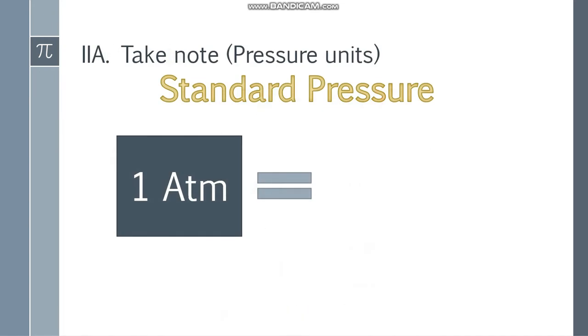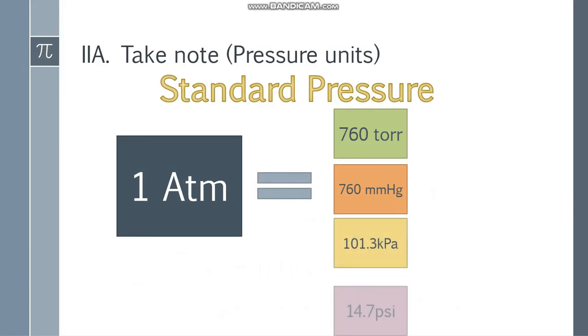Take note, we have many pressure units at standard pressure. If you have standard pressure, it could be 1 atm, 760 torr, 760 mmHg or millimeters of mercury, 101.3 kilopascal or kPa, and 14.7 psi or pounds per square inch. Just in case na iba yung given na unit at hindi siya atm, you may use this conversion unit.